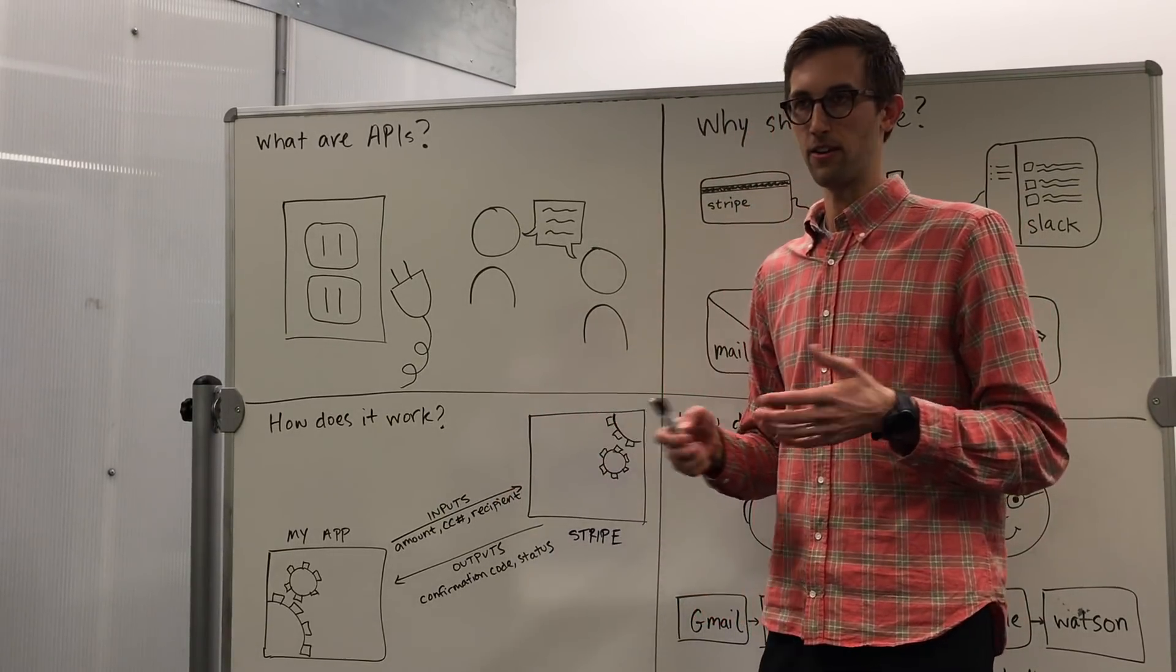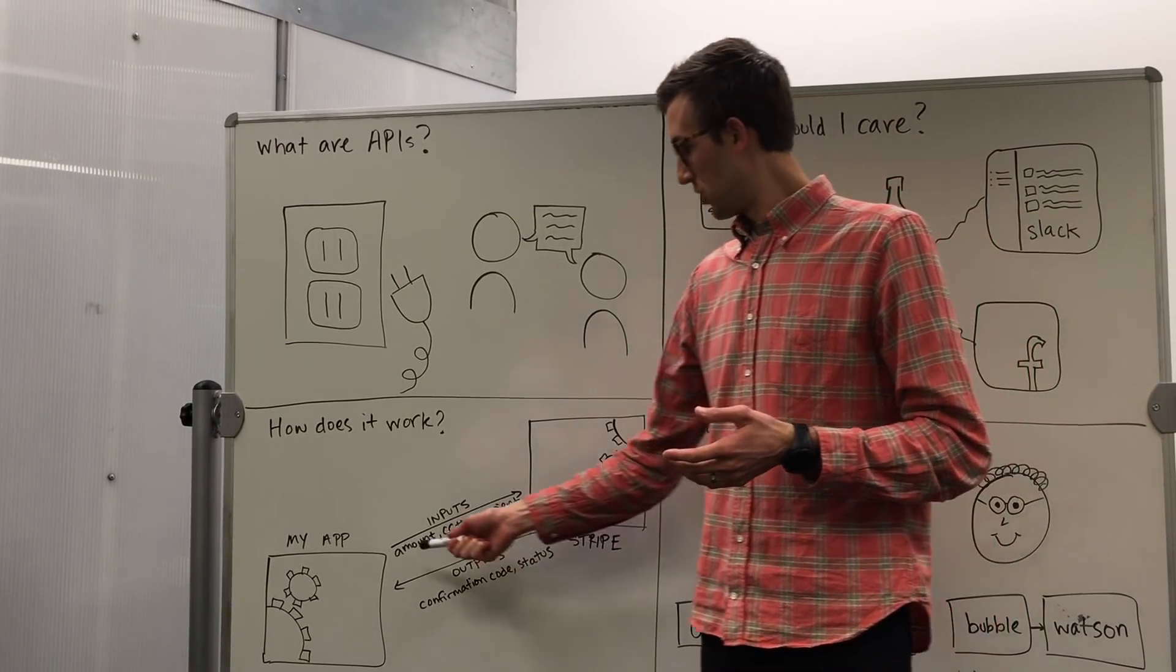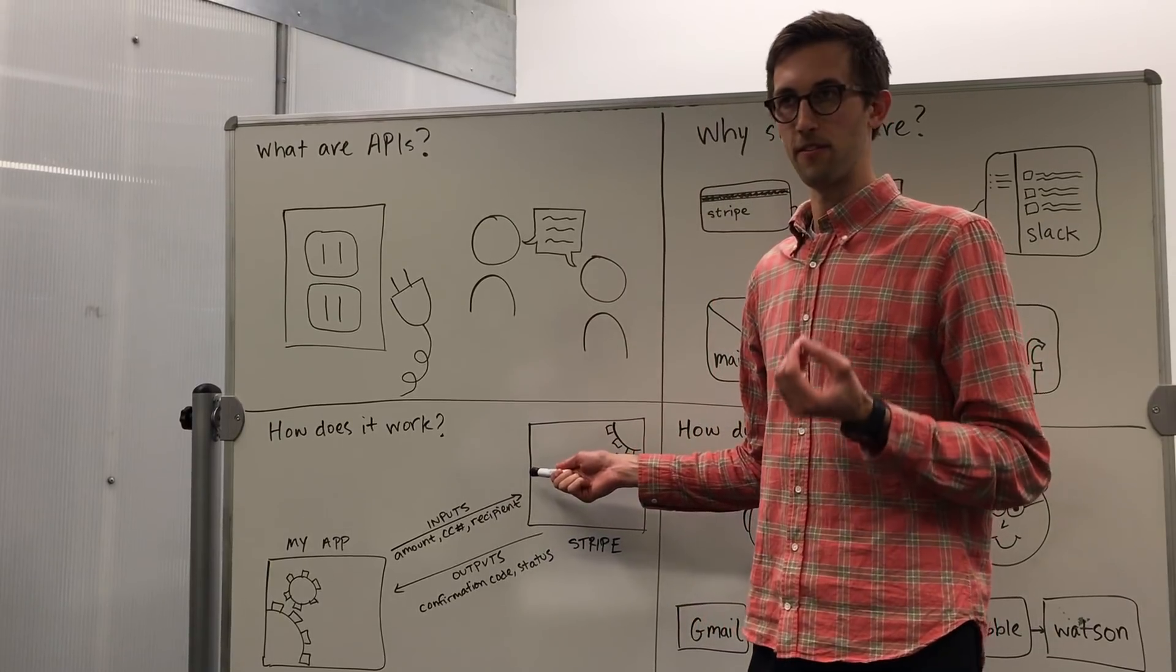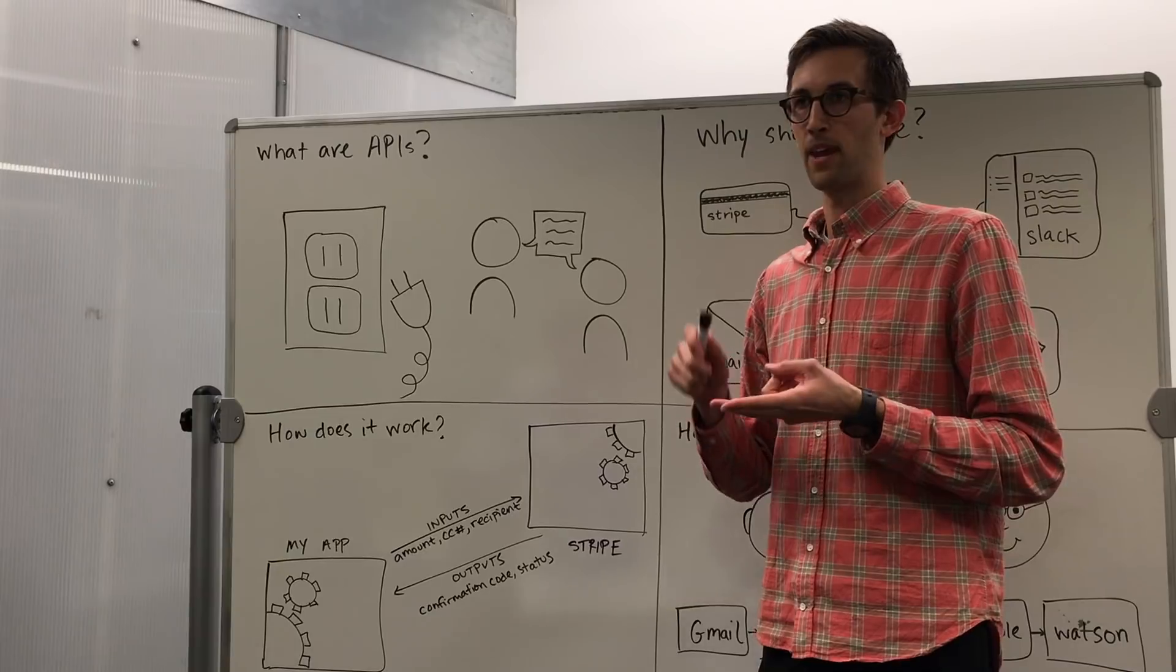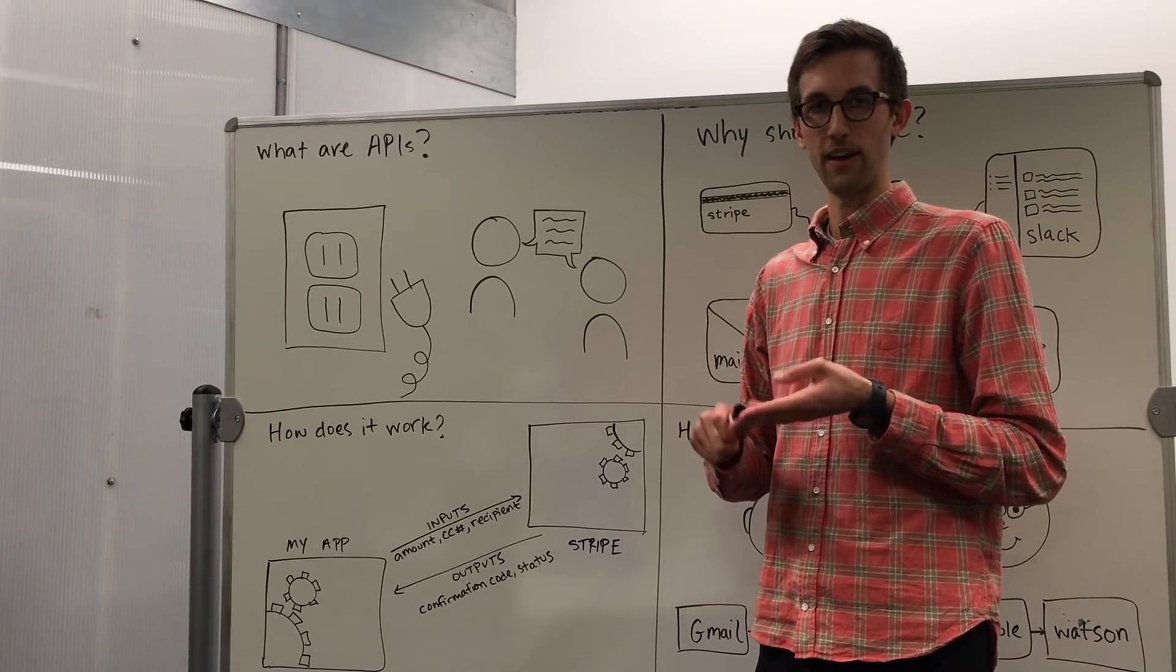And so let's say you had somebody on your site who wanted to pay for something. You would send a few different parameters of information to Stripe. You would say, here's how much they should be paying, here's their credit card information, their security code, etc.